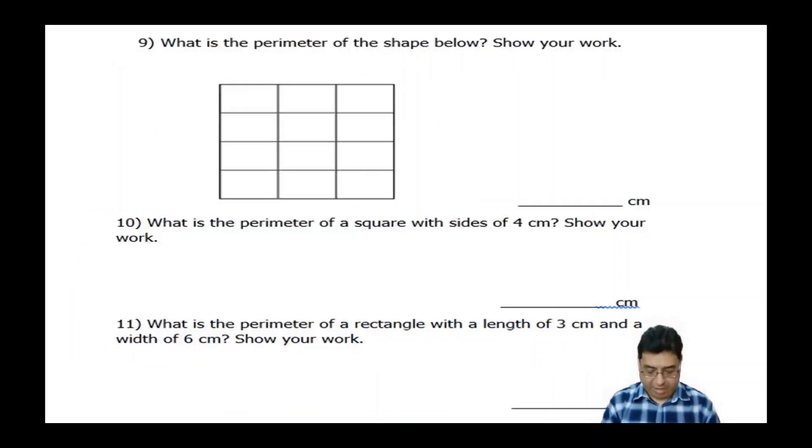And number nine is basically the same thing, but now we're talking about perimeter. So again, just read the directions and answer it for 10 and 11 as well. So just please read it carefully and demonstrate that reading and comprehension that I'm always talking about.